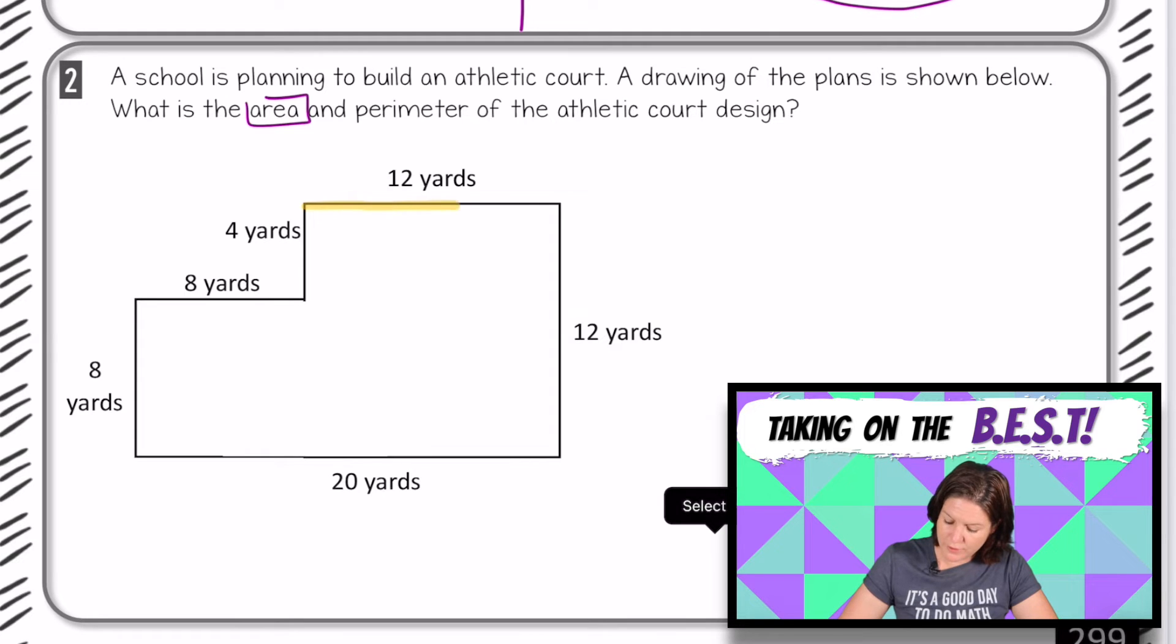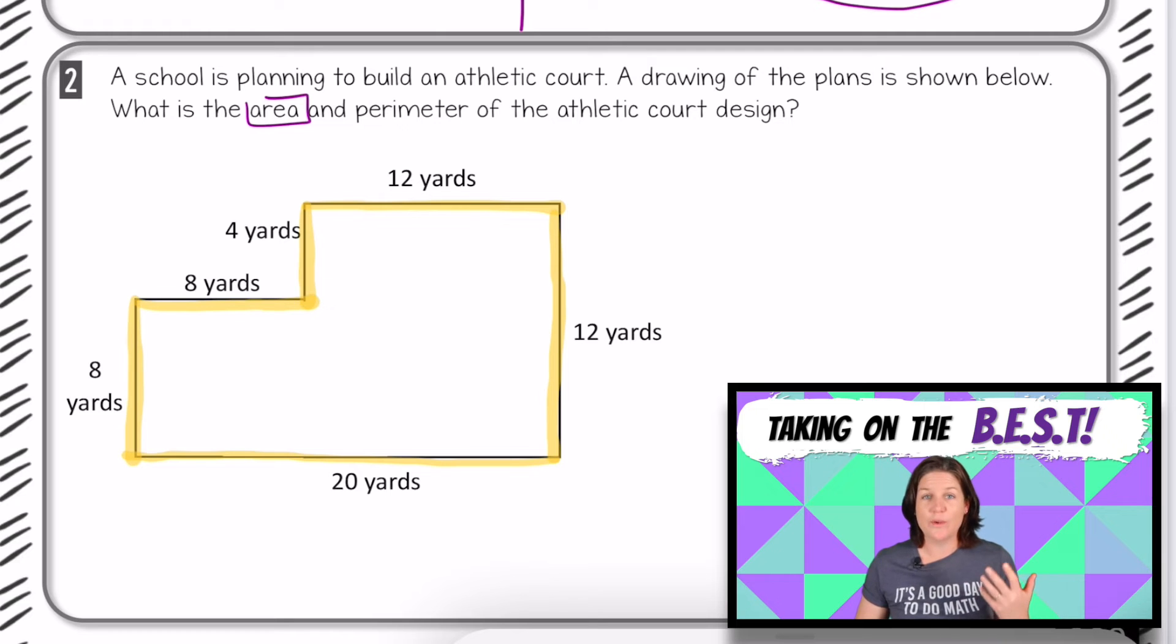Let's see what we've got, though. Okay, so we have a length of 12 yards. We have 12 yards, 20 yards, 8 yards, 8 yards, and 4 yards. We've got measurements for the distance all the way around, which means that we can figure out the perimeter, right? We can add up all the sides. Let's go ahead and do that.